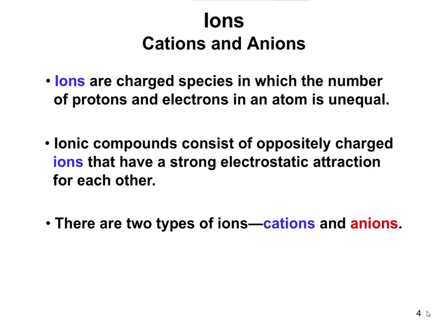Ions have an unequal number of protons and electrons, but they are formed always by gaining or losing electrons — you do not gain or lose protons. The number of protons stays the same. Remember from Chapter 2: if you change the number of protons, you change the type of element. If you add a proton, you move to the next element on the periodic table. So protons stay the same; electrons are gained or lost. Ionic compounds form whenever you have oppositely charged ions.